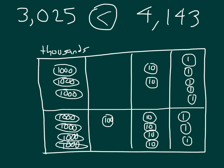So in this case, when that unit is the same — that is, those places are the same — then we can just compare those digits to be able to compare those numbers.